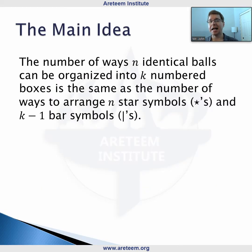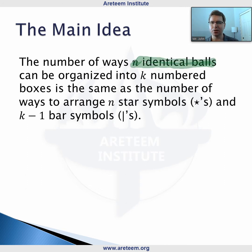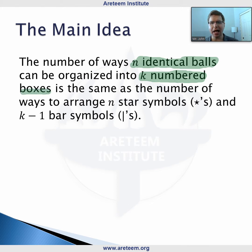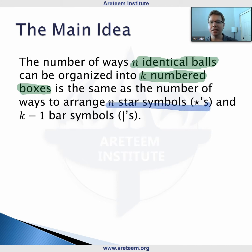Stars and bars is an idea more than anything else. The idea is we want to look at putting n identical balls, organizing those balls into k numbered boxes. The main point — the way you can remember it — is that it's the same as arranging n star symbols and k minus 1 bar symbols.